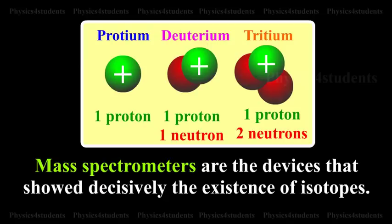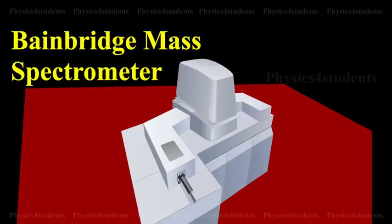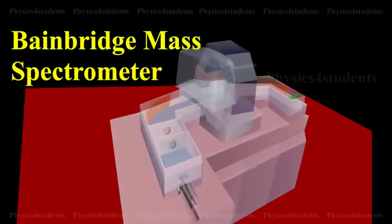Mass spectrometers are the devices that show decisively the existence of isotopes. Bainbridge Mass Spectrometer is an instrument used for the accurate determination of atomic masses.